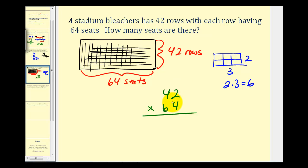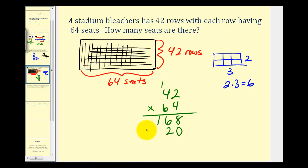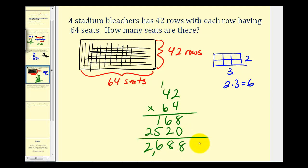So we'll have four times two is eight. Four times four would be sixteen. Now we multiply by the six — we're really multiplying by sixty, so we add a zero to the ones column, then multiply by six. Six times two is twelve — carry the one. Six times four is twenty-four plus one is twenty-five. Now we add: eight, eight, six, and two. So the bleachers contain two thousand six hundred and eighty-eight seats.